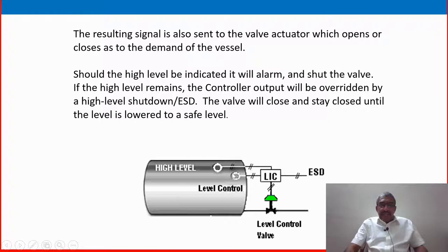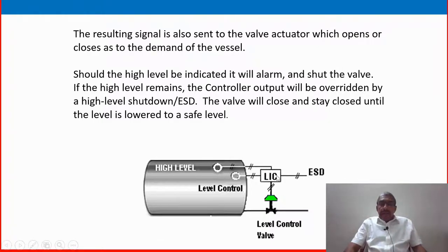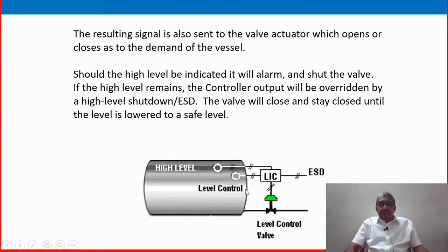The sensor measures the actual level in the tank and sends the signal to the controller through a transmitter. The LIC controller compares the level with the set point — for example, 50% — and sends the output to the control valve. Whenever the level increases or decreases, the valve adjusts accordingly. That is the normal operating condition.